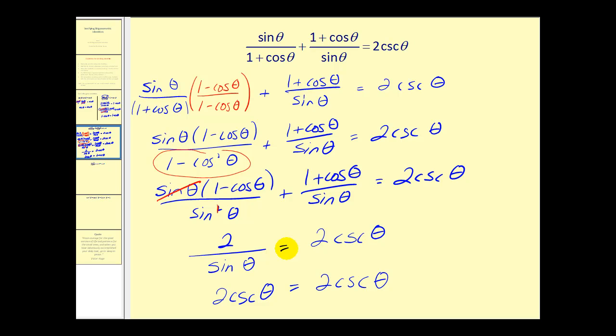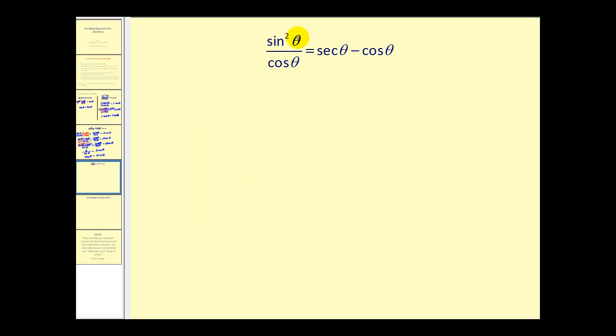Let's go ahead and take a look at a couple more. And we may question which side to work with here. Seeing a sine squared theta here would lead us to perform a substitution using the Pythagorean identity. So we can replace this with one minus cosine squared theta.